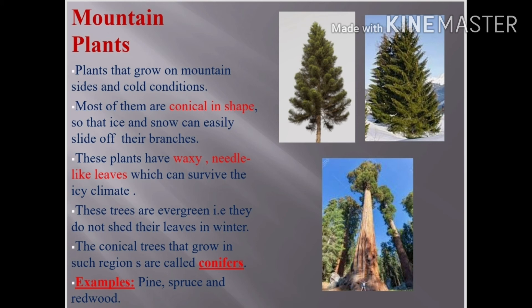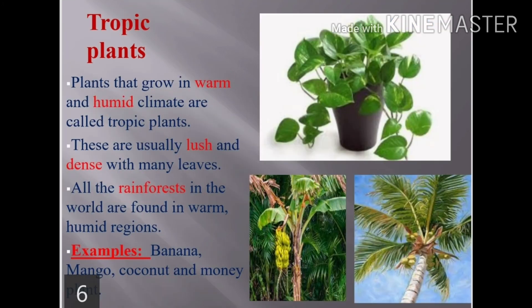Now moving to the next type — tropical plants. Tropical plants grow in a warm and humid climate. These plants are usually lush and dense with many large leaves. All the rainforests in the world are found in warm and humid regions. Examples of tropical plants include banana, mango, coconut, and the money plant.